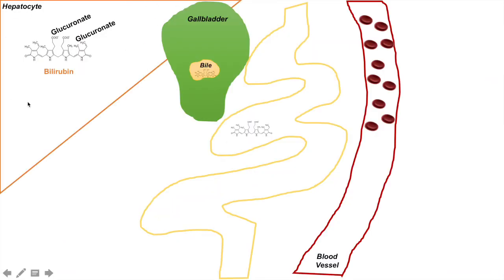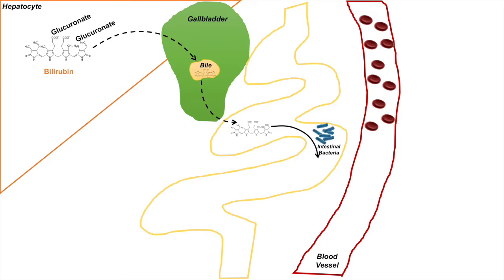Once you have that conjugated bilirubin in your hepatocyte, it'll be released and incorporated into bile within the gallbladder. When bile is released from your gallbladder into your small intestine, it will also release the bilirubin. Since your small intestine is full of intestinal bacteria or intestinal flora, those intestinal bacteria will actually oxidize the bilirubin into something called urobilinogen.